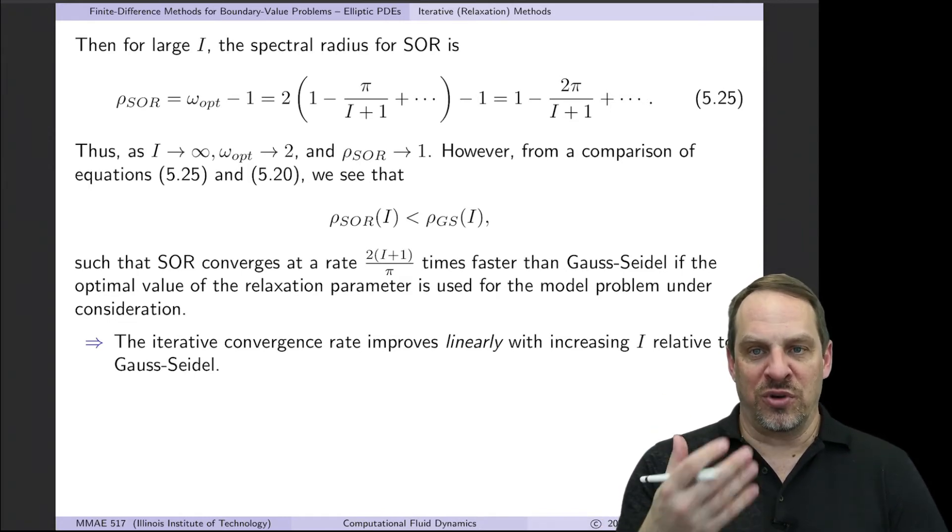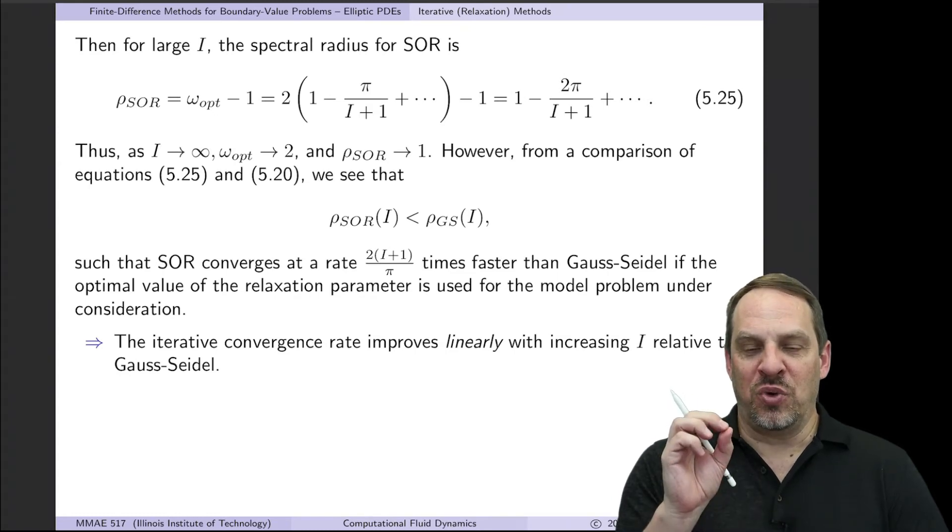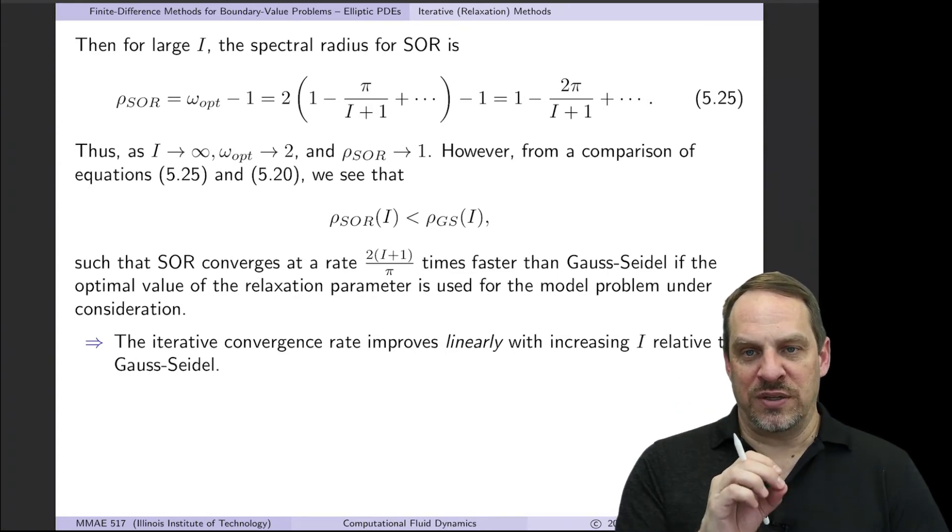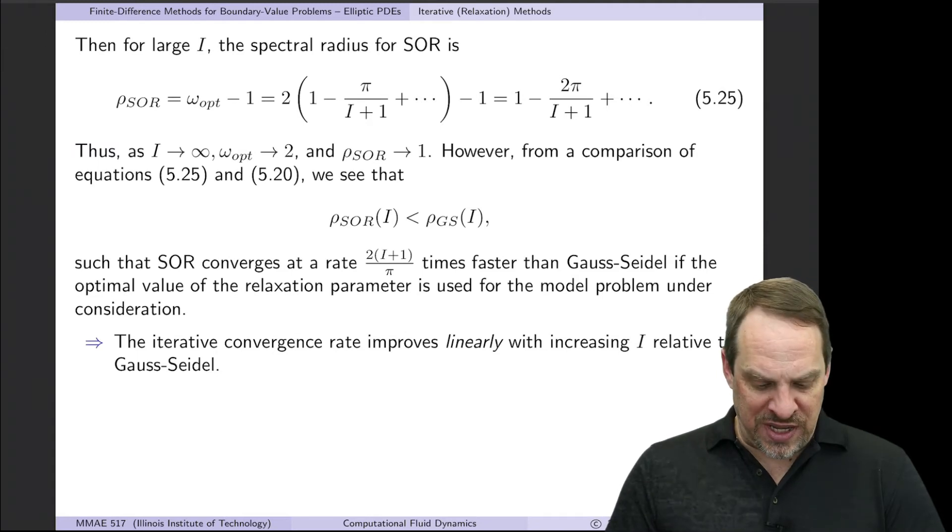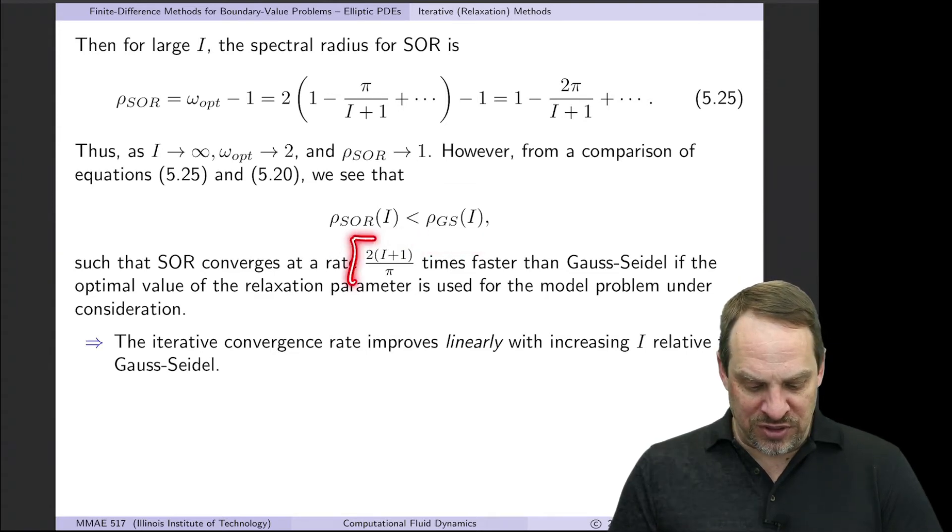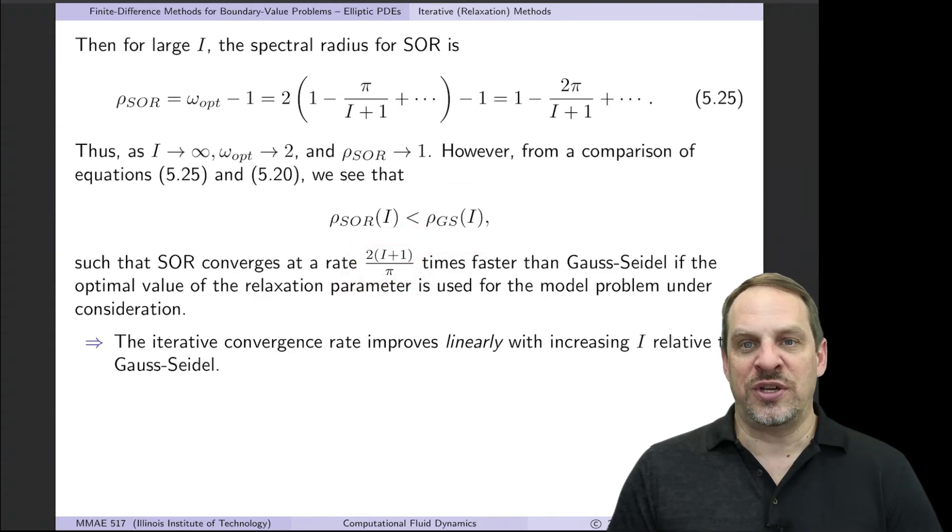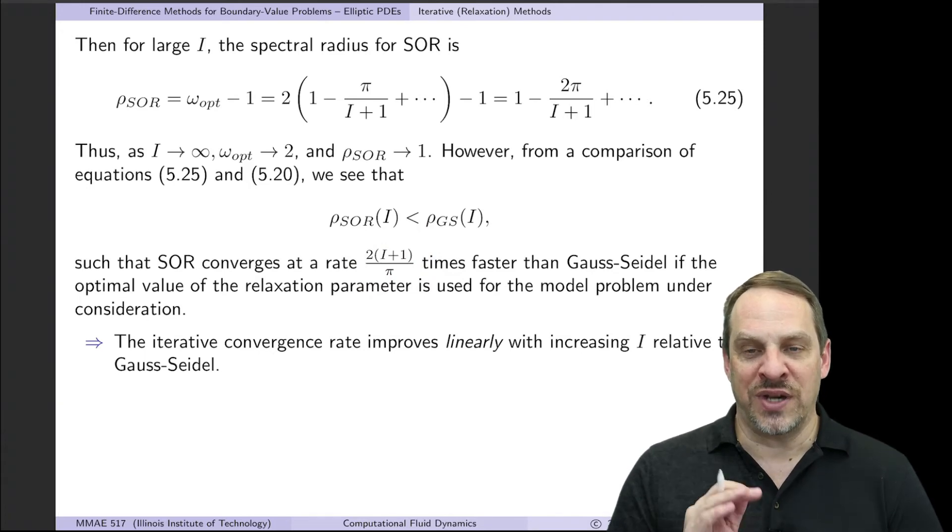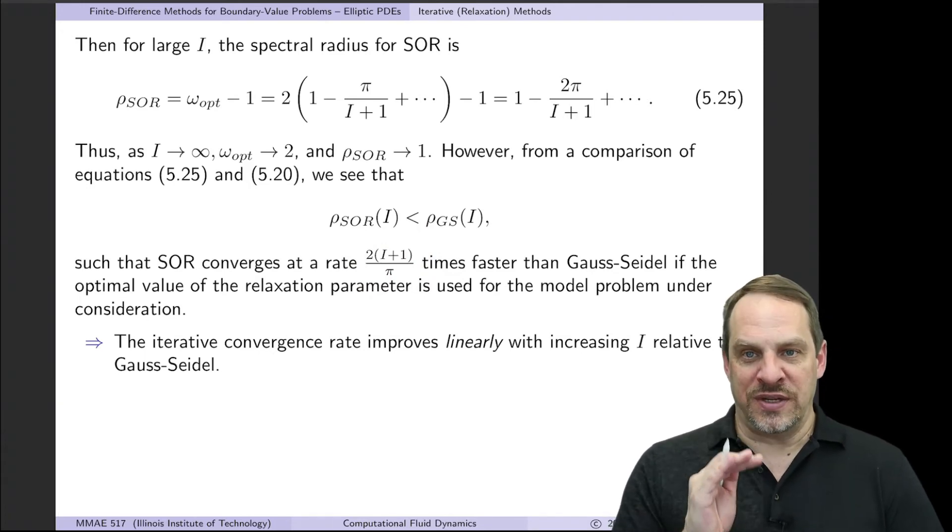Now before I do that, let's just recognize that as the number of points I gets larger, the value of omega_opt goes to 2, because this term would go away, and we just get 2, and the spectral radius goes to 1. Because again, this term would go away, and we would just have 1. So it still has this property as the size of the problem gets bigger and bigger and bigger. It's going to take more and more iterations before it converges.